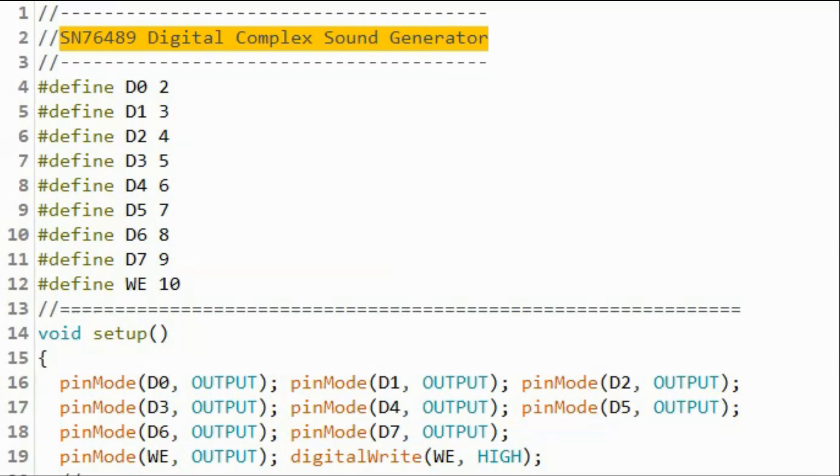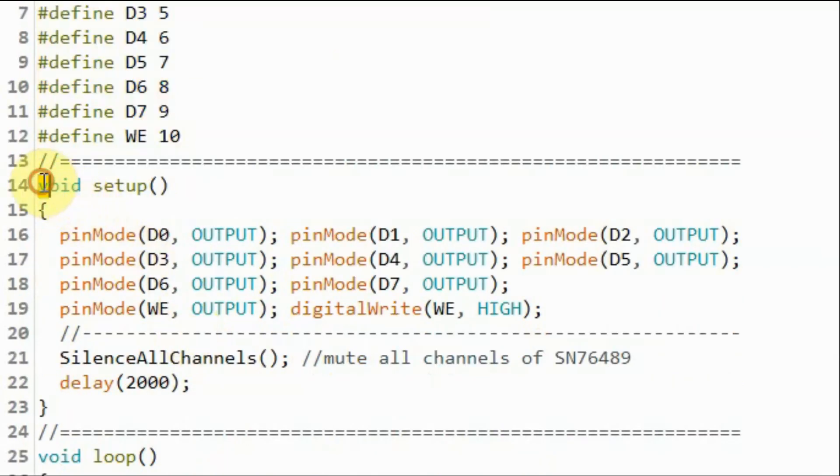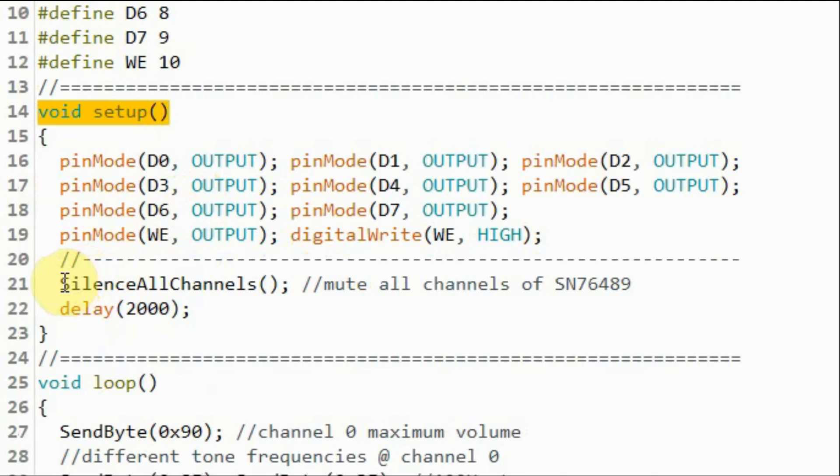A quick look at the C++ sketch. These are macros which indicate the connection of the data lines and the write enable of the SN76489 IC with the digital pins of the Arduino. Inside the setup function, we mute all the channels of the chip by calling this function.